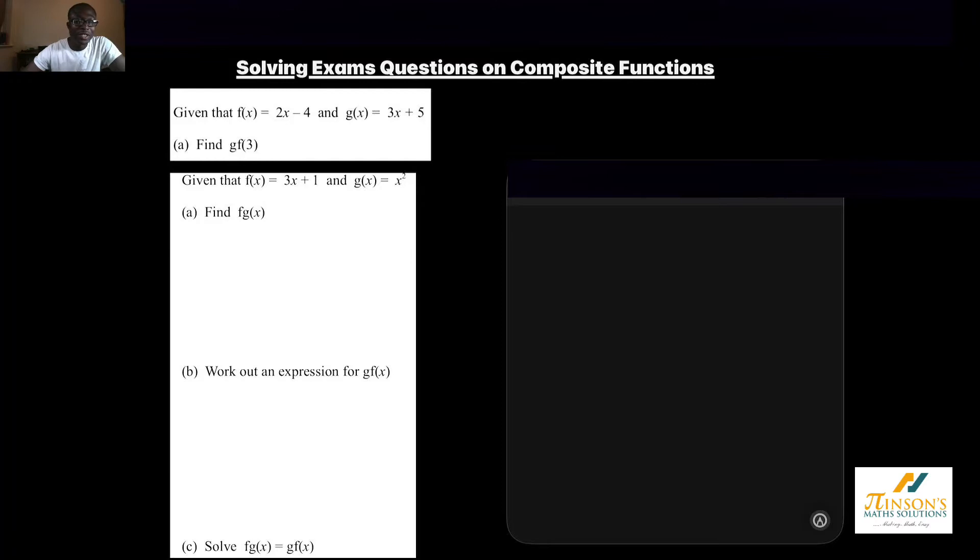The first part says we've been given the function f to be 2x minus 4 and the function g to be 3x add 5. By all means, feel free to pause the video and have a go at the questions yourself before looking at the solutions. So we are to work out the function g of f of 3. We're going to solve 3 into f and then our answer into g.